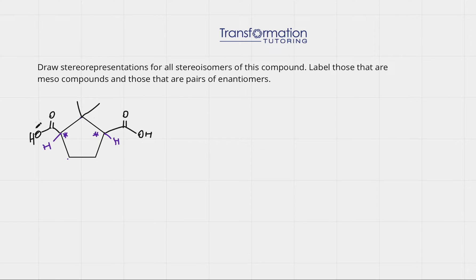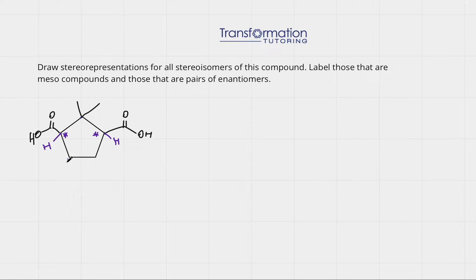The rest of the carbons will not be chiral. For example, this carbon has two methyl groups, so it cannot be chiral because it has two identical groups. In order to be chiral we have to have four different groups. These other carbons are not chiral either because they have two hydrogens not shown, so they cannot have four different groups.